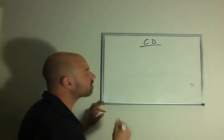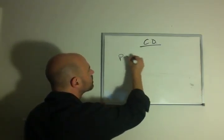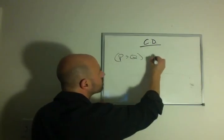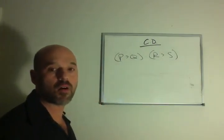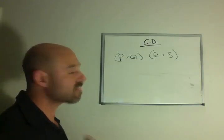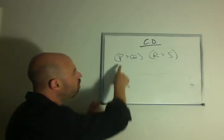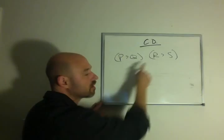The first line is two if-then statements. P implies Q and R implies S. In the second line, we learn that one of these two ifs is true.